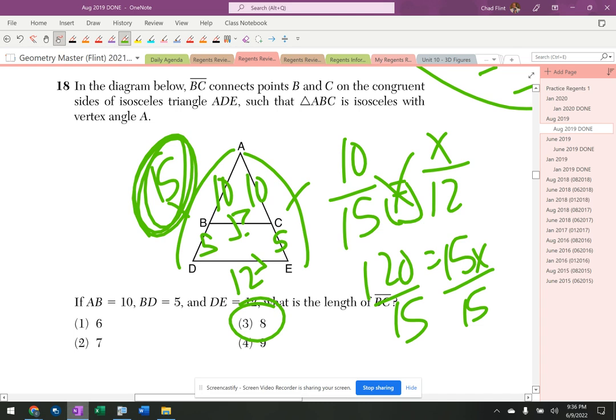Yep, alright, so that's 8. So your answer is 8. If it looks like a similar triangle, you're probably very safe just assuming it's a similar triangle.